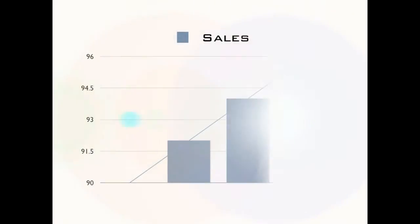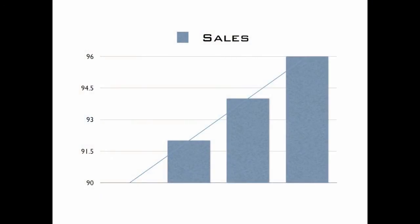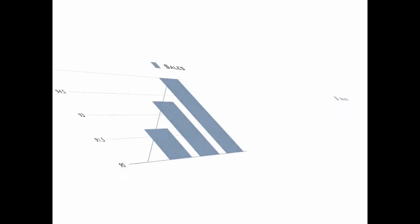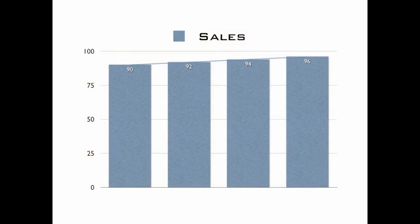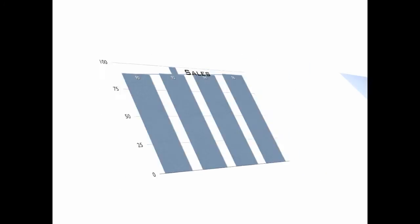Now this one's much easier to read, but it's very misleading. It doesn't start at zero, and we get an increase that looks really big. But when we put the real figures in proportion from zero, the increase doesn't look so big at all. So you can see it looks very different.